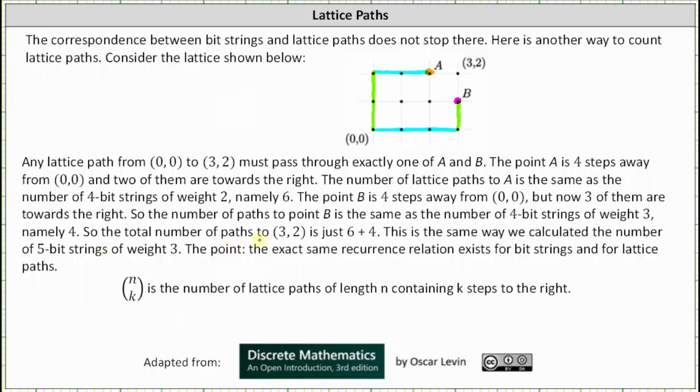So the total number of paths to (3,2) from (0,0) is just 6 plus 4, which equals 10, because all paths must pass through point A or point B. This is the same way we calculated the number of five bit strings of weight three. The point is the exact same recurrence relation exists for bit strings and for lattice paths. Therefore, once again, we can determine the number of lattice paths of length n containing k steps to the right by determining n choose k.